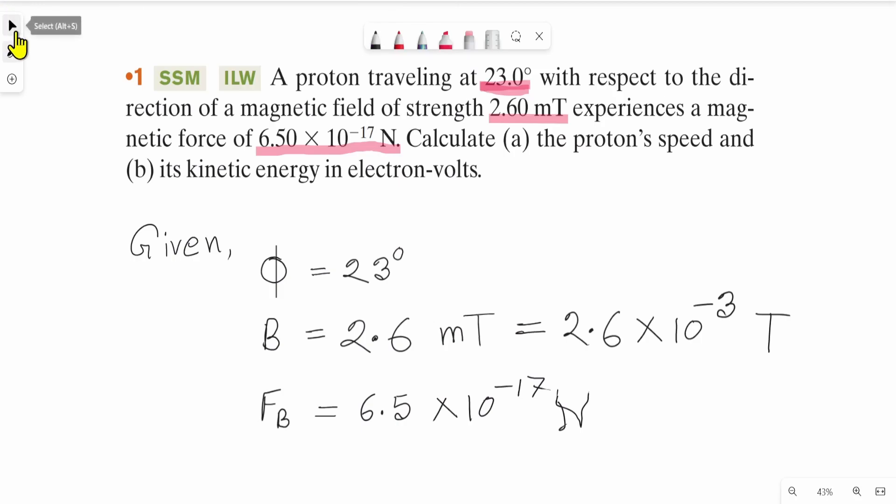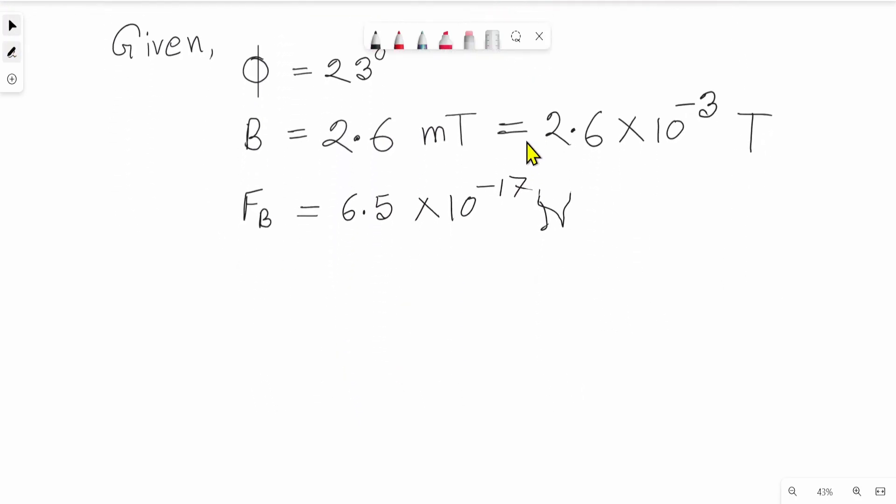We know that the magnetic force FB can be written as q V B sin phi, where V is the proton's speed. So we can write V equals